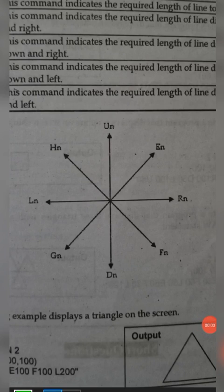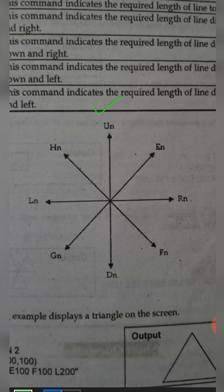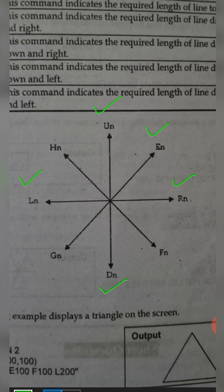A figure is displayed showing different directions that can be used with the draw statement commands. The command U draws an upward line, D draws downward, L draws to the left, R draws to the right. E draws diagonally up-right, F draws diagonally down-right, G draws diagonally down-left, and H draws diagonally up-left. The integer following each command specifies the length of the line.